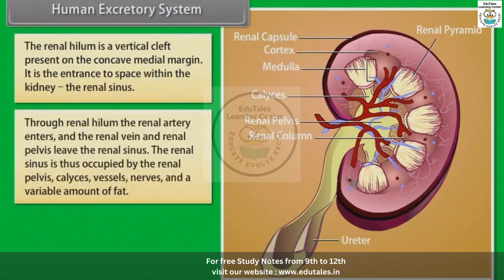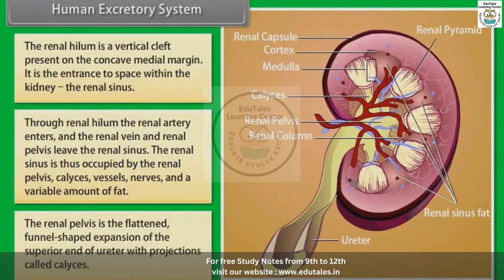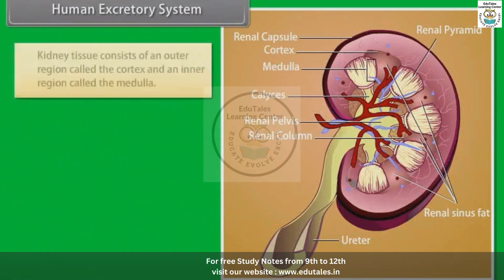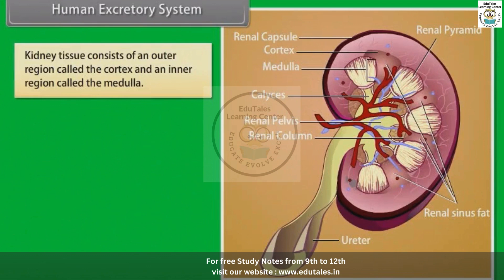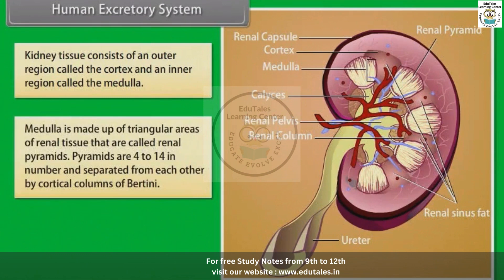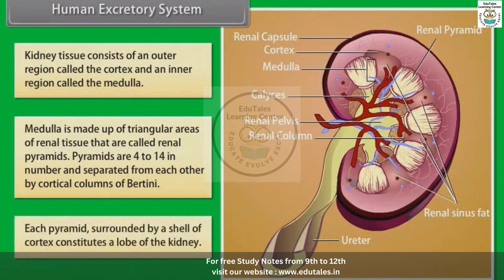Through the renal hilum, the renal artery enters and the renal vein and renal pelvis leave the renal sinus. The renal sinus is occupied by the renal pelvis, calyces, vessels, nerves and a variable amount of fat. The renal pelvis is the flattened, funnel-shaped expansion of the superior end of the ureter with projections called calyces. Kidney tissue consists of an outer region called the cortex and an inner region called the medulla. The medulla is made up of triangular areas of renal tissue called renal pyramids, which are 4 to 14 in number and separated by cortical columns of Bertin. Each pyramid surrounded by a shell of cortex constitutes a lobe of the kidney.